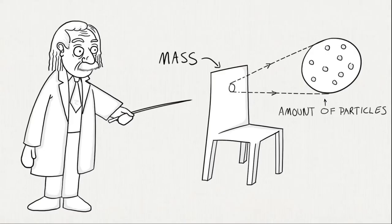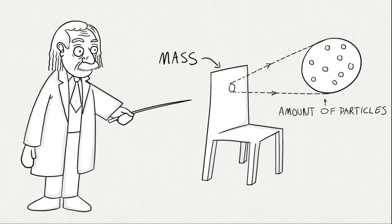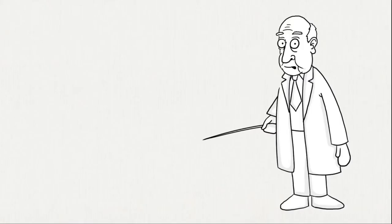Mass represents the amount of particles in an object. The more mass, the heavier it is. But in the 60s, Peter Higgs noticed that particles don't have volume, they appear empty. So how can they have mass?